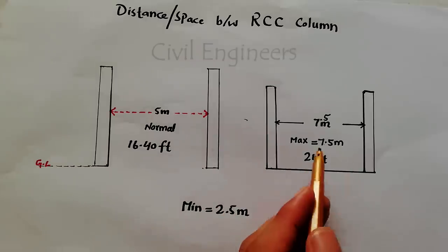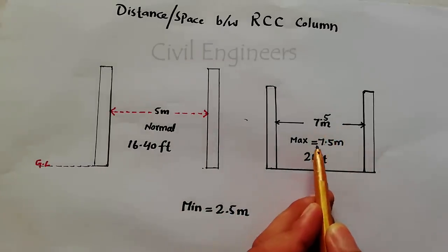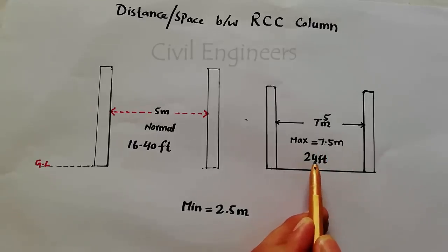And maximum distance between two columns is 7.5 meter maximum. It is equal to 24 feet.